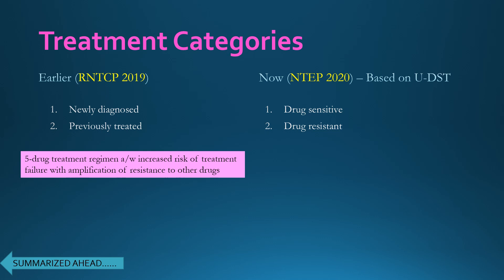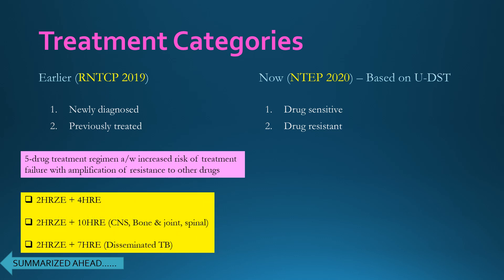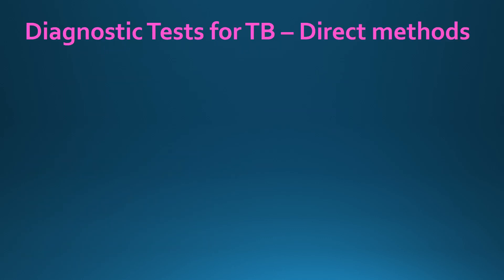The most commonly used regimen is 2HRZD + 4HRE, used in patients with pulmonary TB and simple extra-pulmonary tuberculosis such as tubercular lymphadenopathy. For CNS, bone, joint, and spinal tuberculosis, 2HRZD + 10HRE is used, and 2HRZD + 7HRE for patients with disseminated tuberculosis.